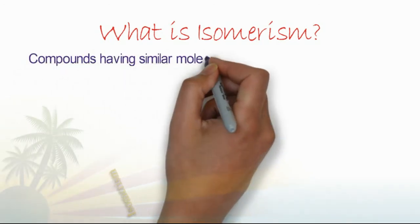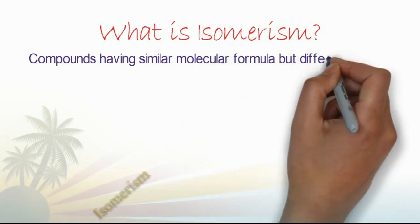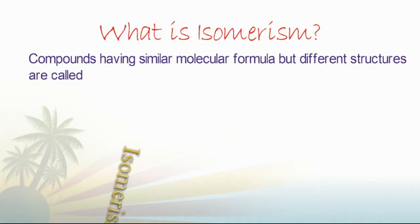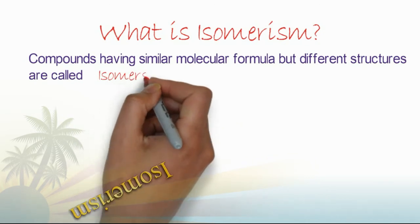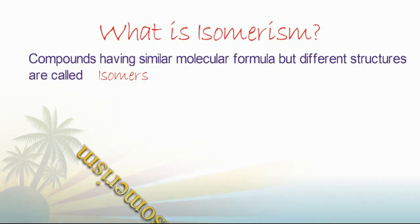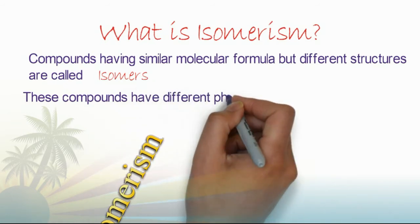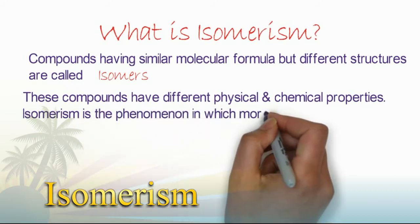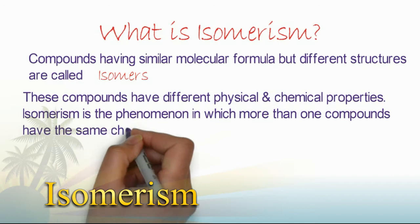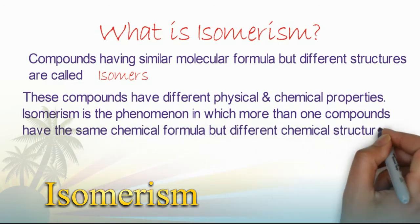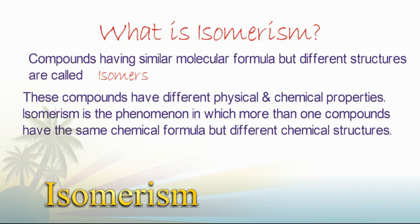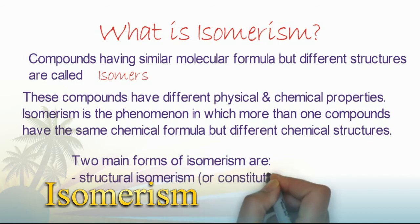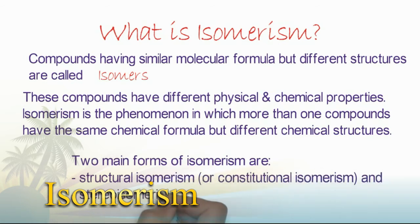The question is: what is isomerism? Compounds having similar molecular formula but different structures are called isomers. This is the definition. The phenomena is known as isomerism. These compounds have different physical and chemical properties. Isomerism is a phenomenon in which more than one compound has the same chemical formula but different chemical structures.